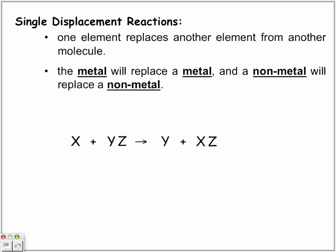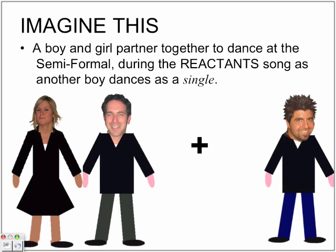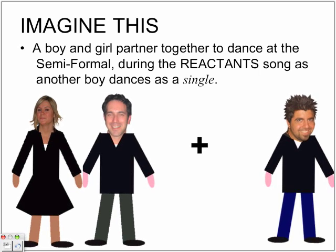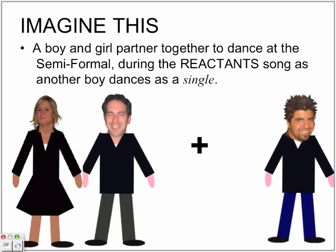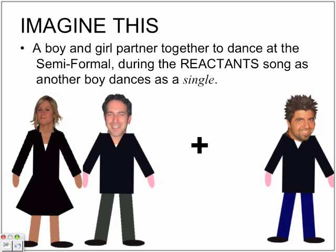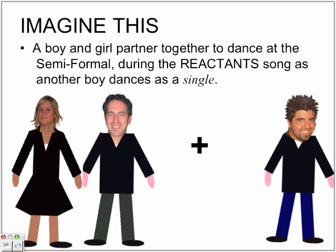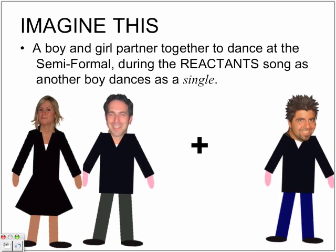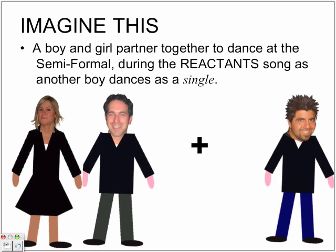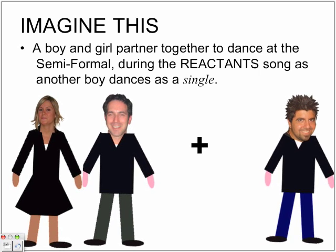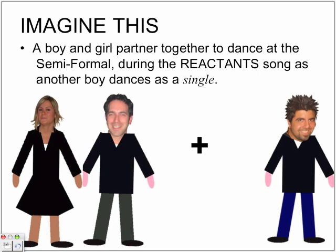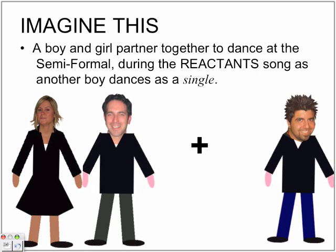Let's look at this in a way where maybe we might understand it a little bit better in common places. Imagine this: a boy and girl partner together to dance at the semi-formal. During the reactant song, which is playing, another boy dances as a single. So here we have our couple dancing, and here's our lonely, single individual dancing.